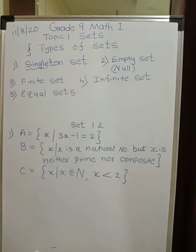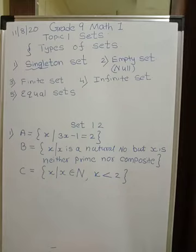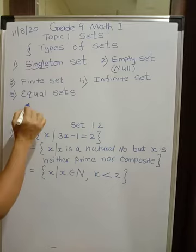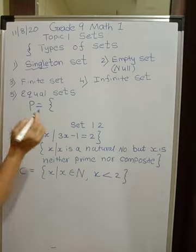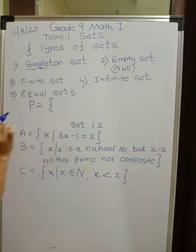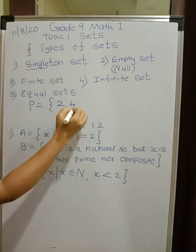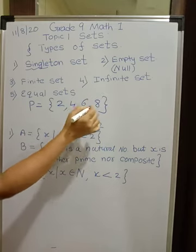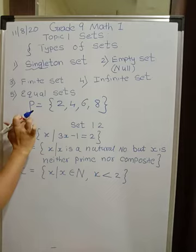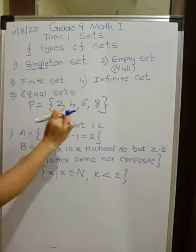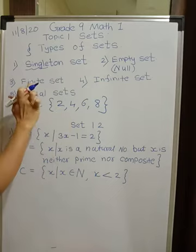The third type of set is finite. Finite means the number of elements is limited — you can count them. For example, P is a set of natural numbers less than 10 and divisible by 2. Natural numbers start with 1, so those less than 10 and divisible by 2 are 2, 4, 6, and 8. That's all — 10 cannot be included because the condition is less than 10. So this P set contains 4 elements, a finite number, and such a set is called a finite set.